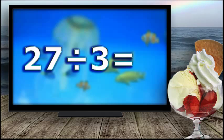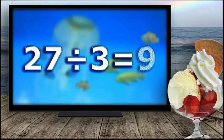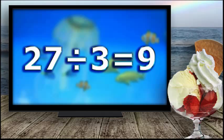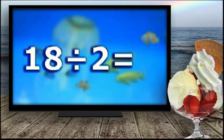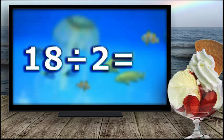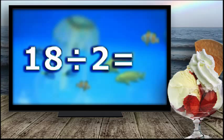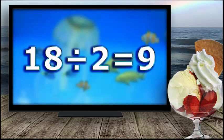Twenty-seven divided by three equals nine. Eighteen divided by two equals nine.